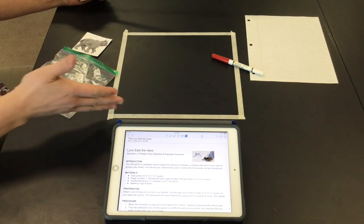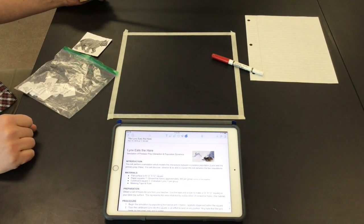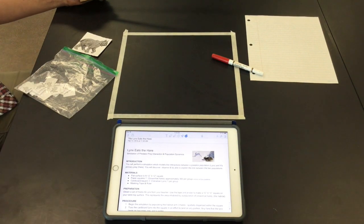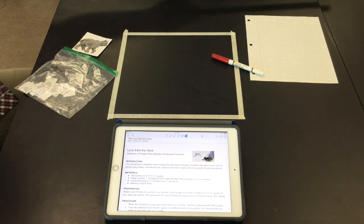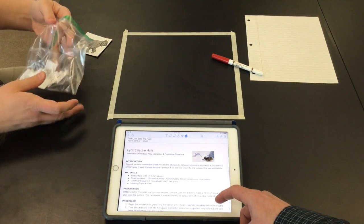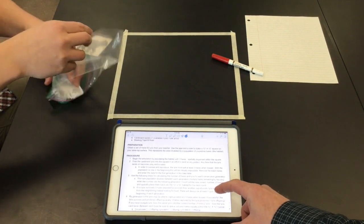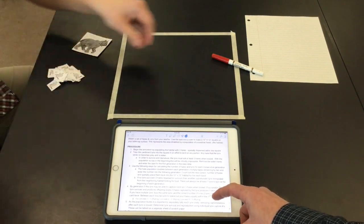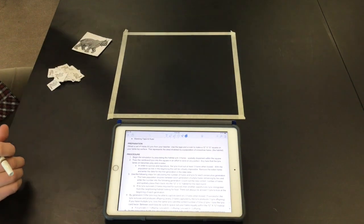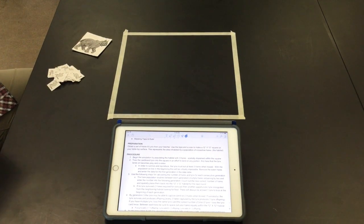So most of you will walk in, you'll have this habitat all set to go and then you'll be ready to participate in the simulation by using the lynx and the hares. So we'll get rid of some of this other stuff that we don't need currently. All right, so we're just going to walk through the procedure and take a few minutes to do that so you can visualize it.